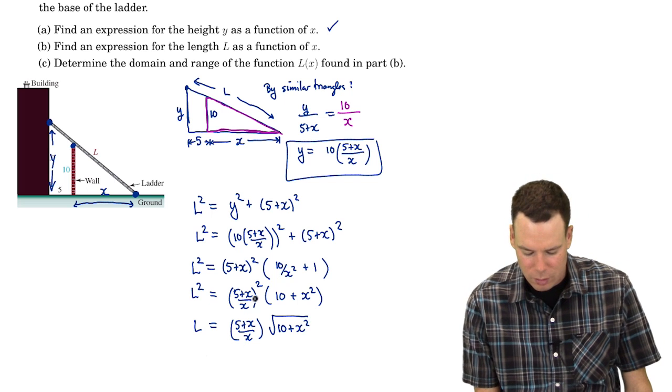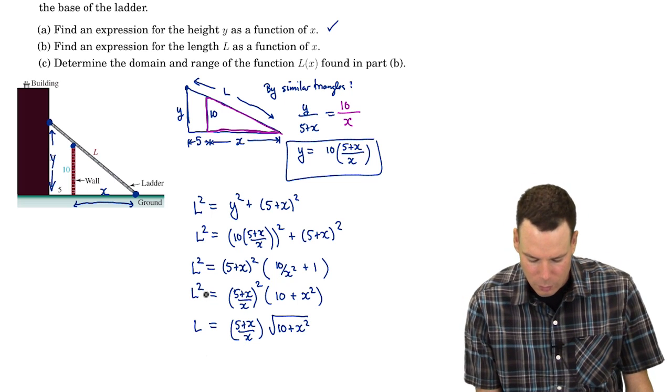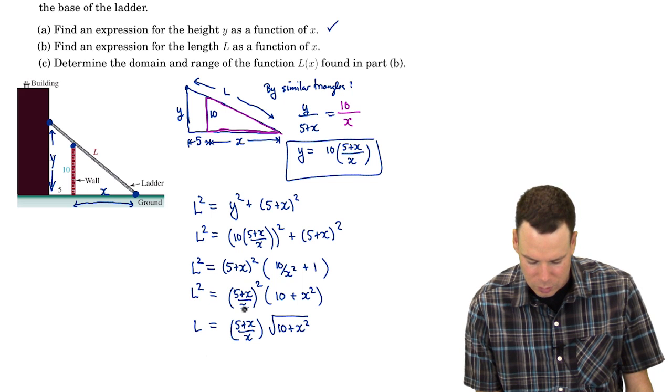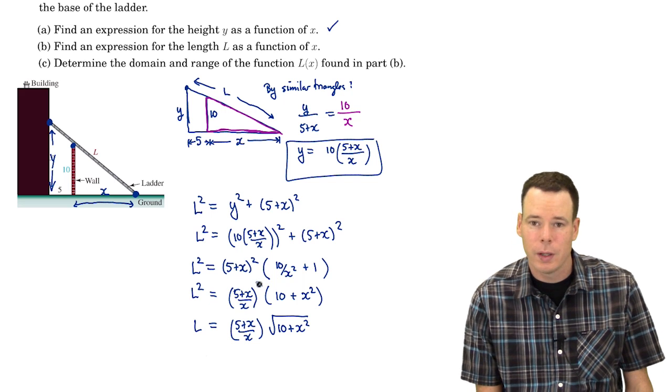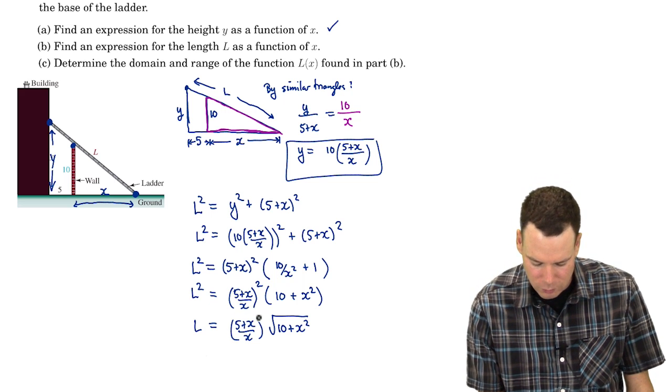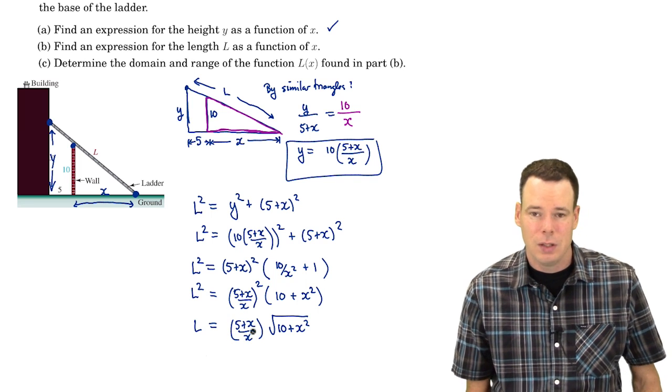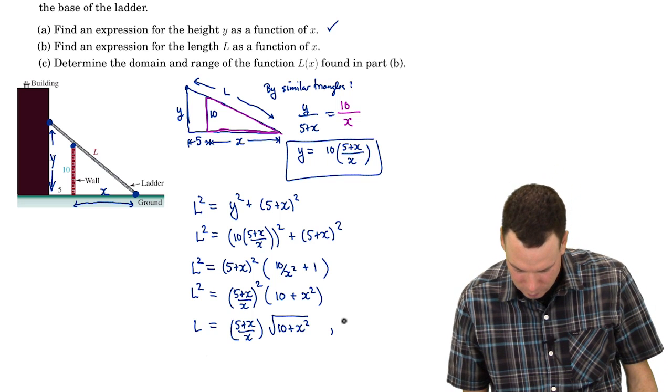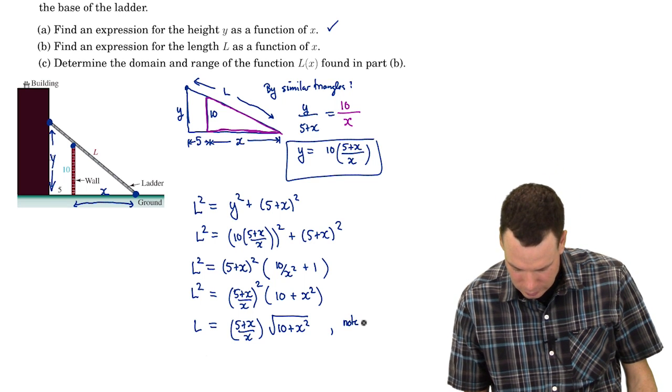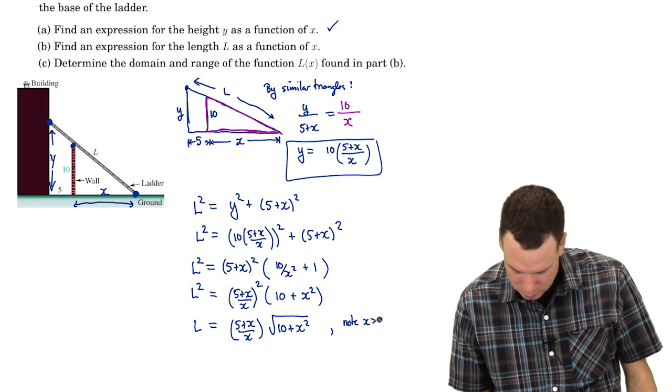There's one point to note here: when I take the square root of (5 + X)/X all squared, I really should have absolute values here. Absolute value of (5 + X)/X. The point is, I don't need those absolute values since X is positive.